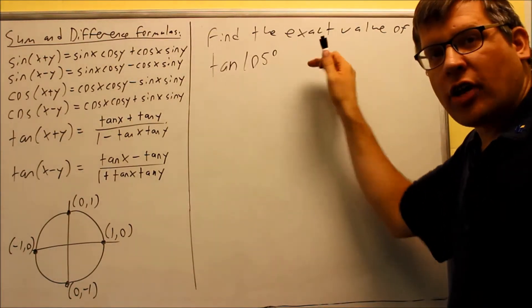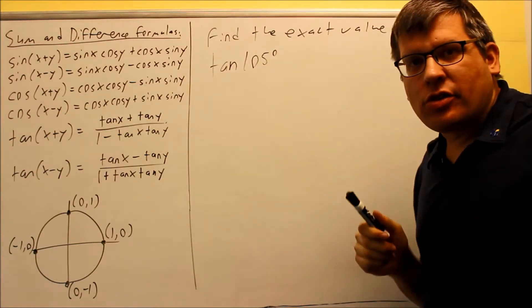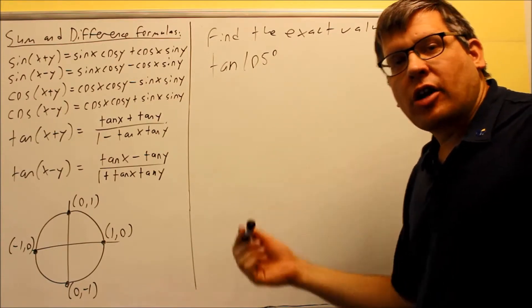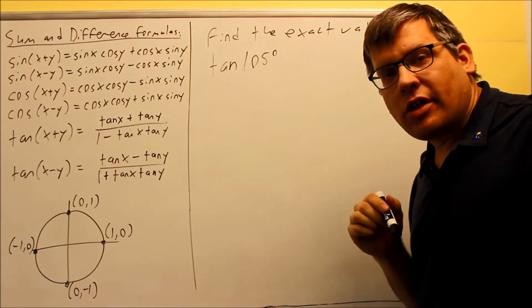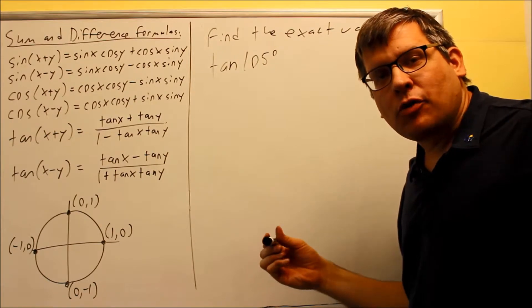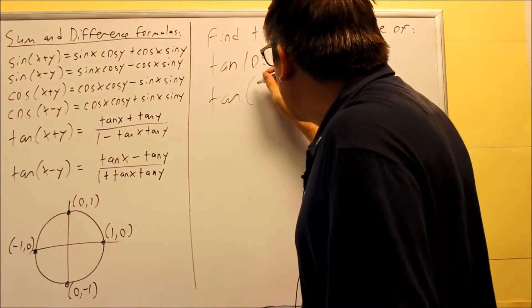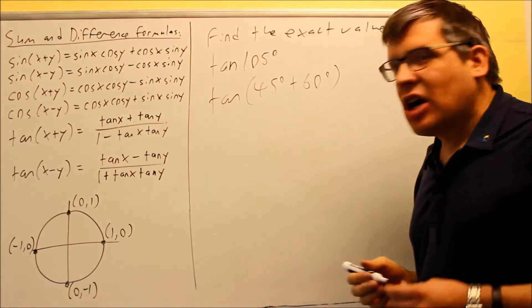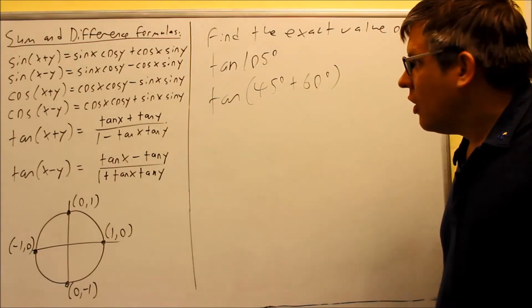Okay, one more, we have tangent 105, we want to find the exact value of that. Now, the previous example I did involved finding one angle from the table, and also another angle we had to use with reference angles. This one, 105, we can actually write that as 45 plus 60, and then we have two angles that happen to be from the table. So if you can get two angles from the table, you want to go ahead and definitely do that. So 45 plus 60, that's how I'm going to rewrite this. It adds up to be 105, and then these two angles individually are from our table.